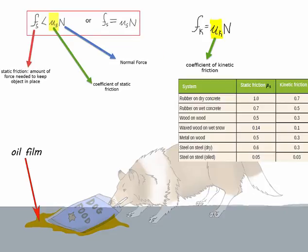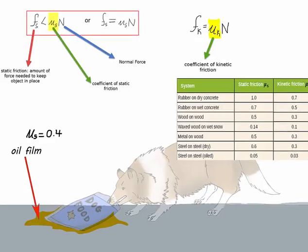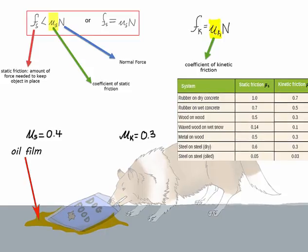So here are some examples. Note that the coefficient is usually taken from a table like this and it refers to two surfaces. There is no plastic on oil though. So let's estimate that the coefficient will be 0.4 for the static friction. And once the bag starts moving, we'll set the kinetic friction coefficient for 0.3.